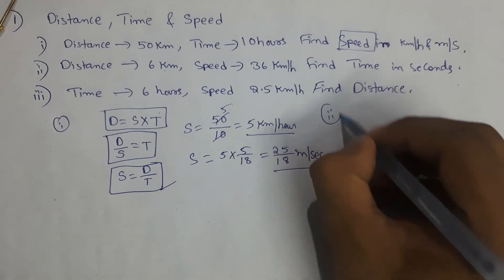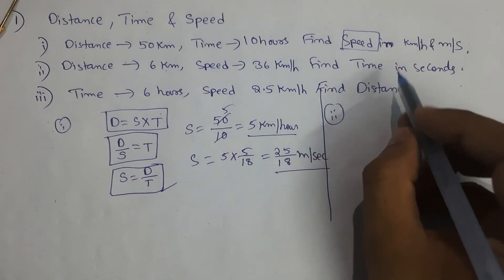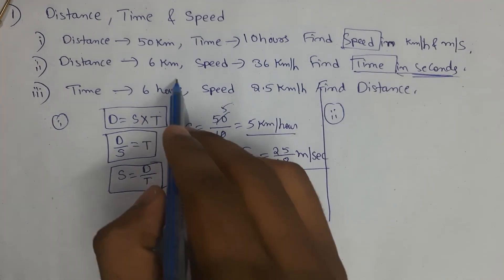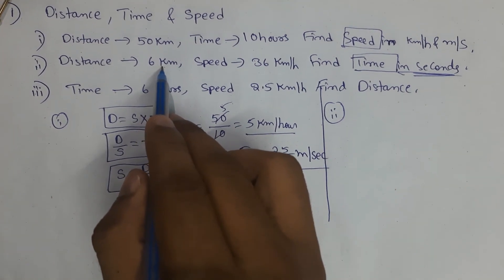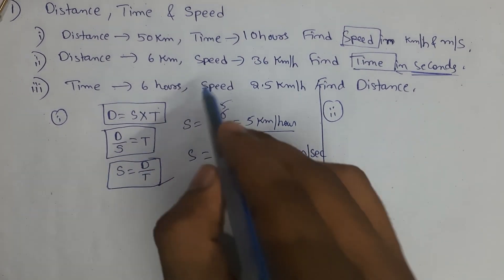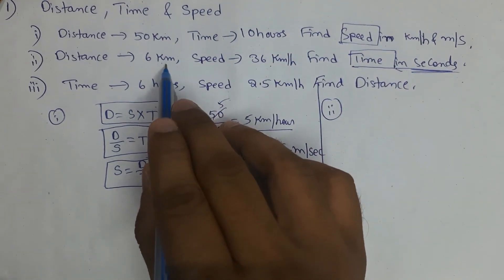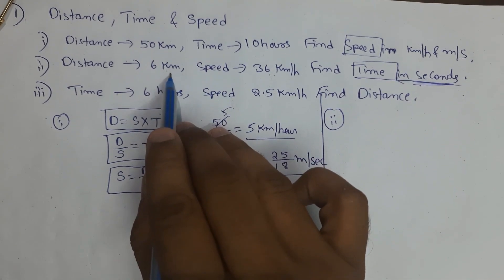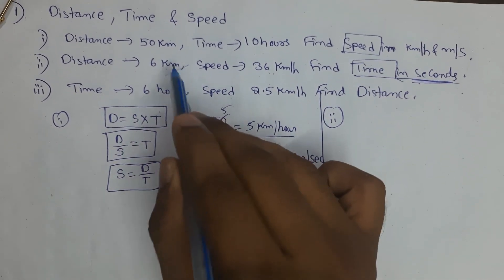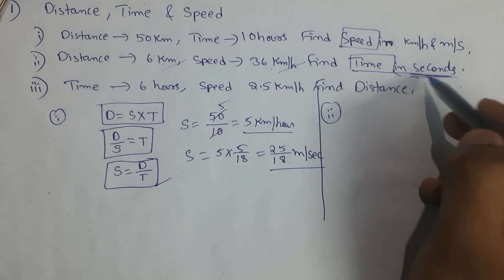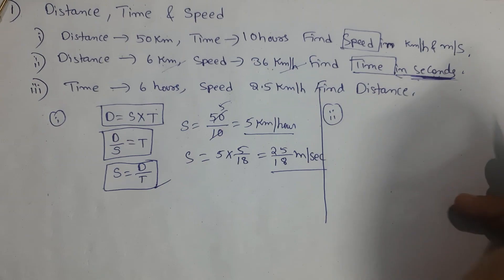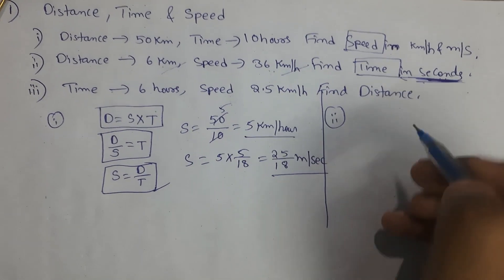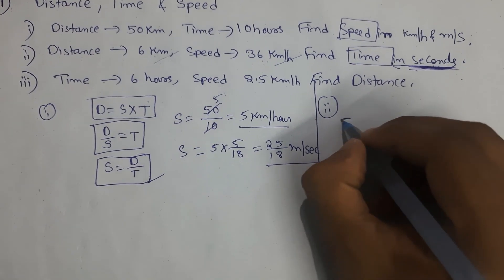Now the second problem. Here time is asked to be found in seconds. One thing you have to keep in mind when you see a problem: check whether all the units are given and asked in the same system. Here distance was given in kilometers and speed also given in kilometers per hour, but time was asked to find out in seconds, so we have to convert given units into the required units.